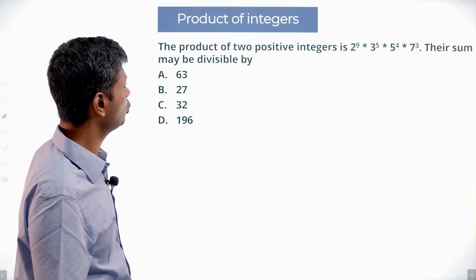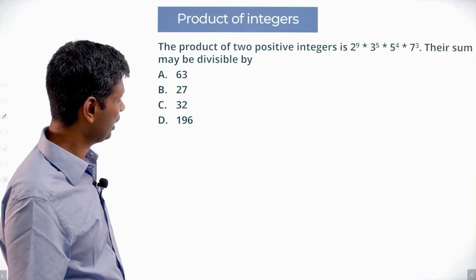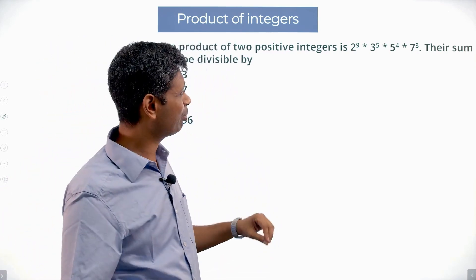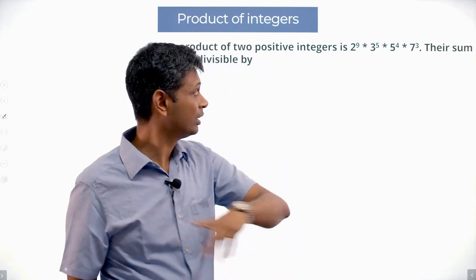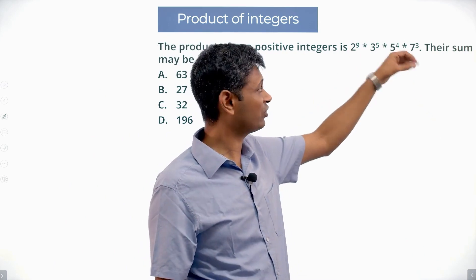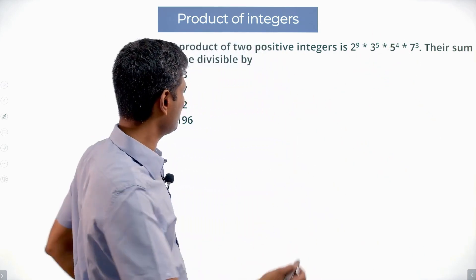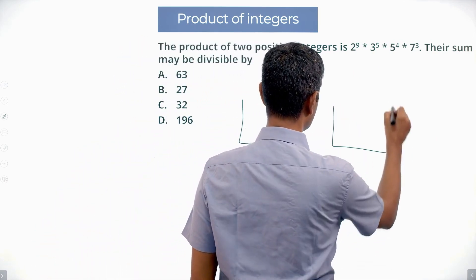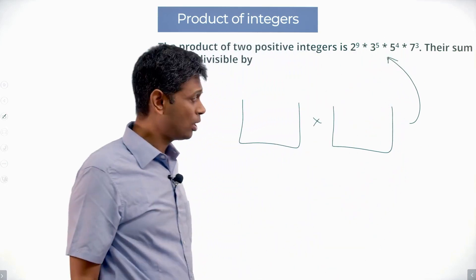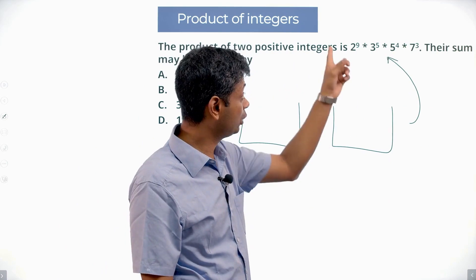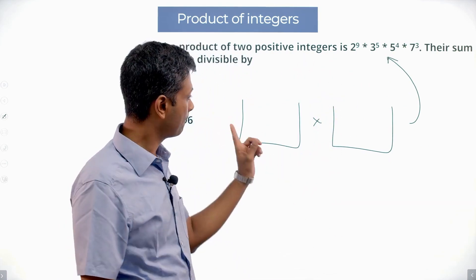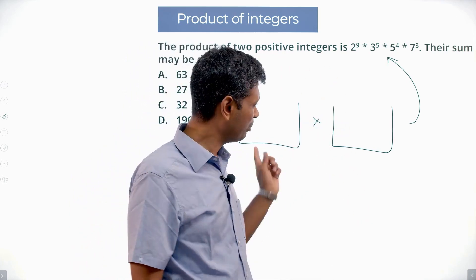The product of two positive integers is 2⁹ × 3⁵ × 5⁴ × 7³. This prime factorization means the product of these two numbers has nine 2s, five 3s, four 5s, and three 7s. So if I'm splitting into two numbers whose product gives this, between those two numbers I need to account for all nine 2s, five 3s, four 5s, and three 7s.